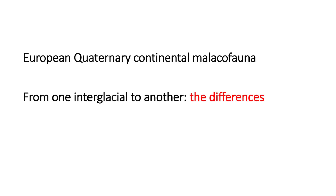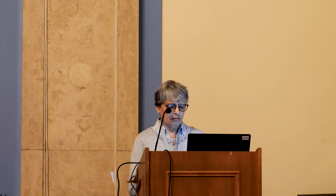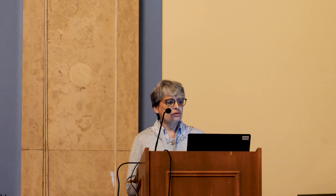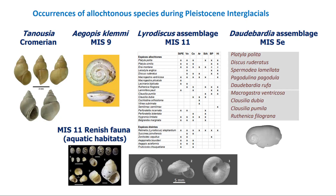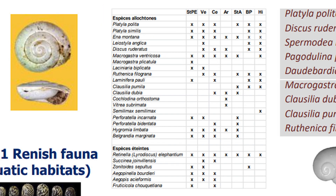Now let's see the differences. The differences are mainly linked to the occurrence among these species of what we call allochthonus species, meaning species which are out of their modern range. These species are particularly numerous during interglacials. A single species can characterise a complex of interglacials — this is the case of Tanousia during the Cromerian — or a single species whose occurrence is limited to a single interglacial, as is the example of Aegopis during Stage 9. Most interesting is that some interglacials can be characterised by a group of species, by assemblages.